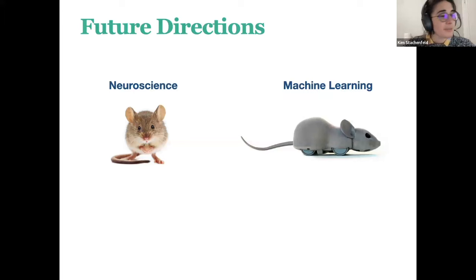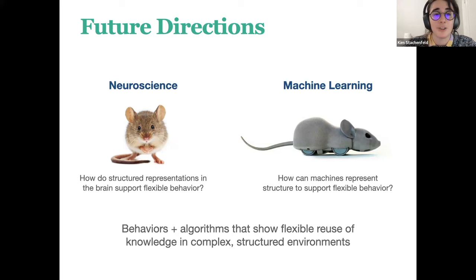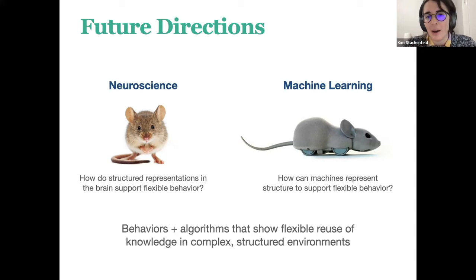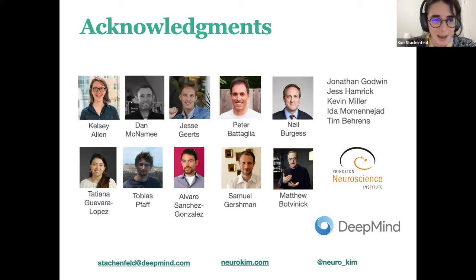For future directions, I'm really interested in applying these methods to new machine learning and neuroscience directions. On the neuroscience side, I'm especially interested in how structured representations in the brain support flexible behavior, and how we can use structured neural networks to trade off expressiveness with structure and interpretability of different special architectures. I'm also interested in how we can get machines to represent the same kind of structure to support flexible reasoning. I'm essentially out of time, so I'll go to acknowledgments rather than elaborating on future work.